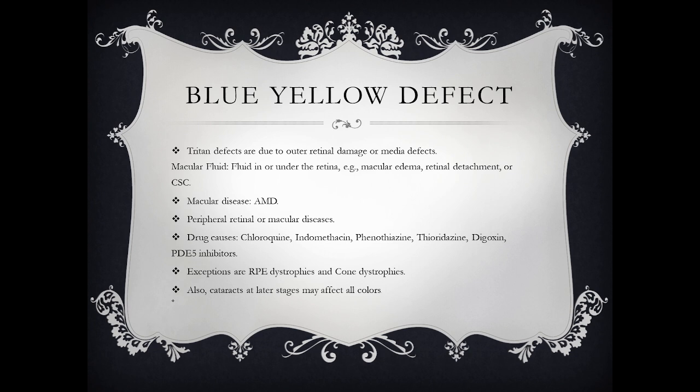Blue-yellow defects — tritan defects — are due to outer retinal damage or media defects. This means if there is macular fluid in or under the retina, macular edema, retinal detachment, or central serous chorioretinopathy (CSCR), a blue-yellow defect may result.